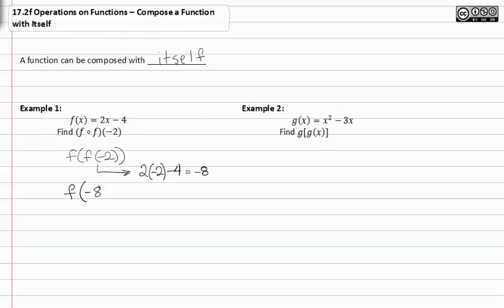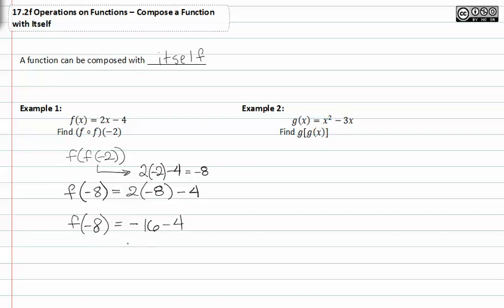f of negative eight can then be evaluated. We know f of x to be two times x minus four, so wherever there was an x, we'll put the negative eight. So now we have f of negative eight equal to negative sixteen minus four, or negative twenty.